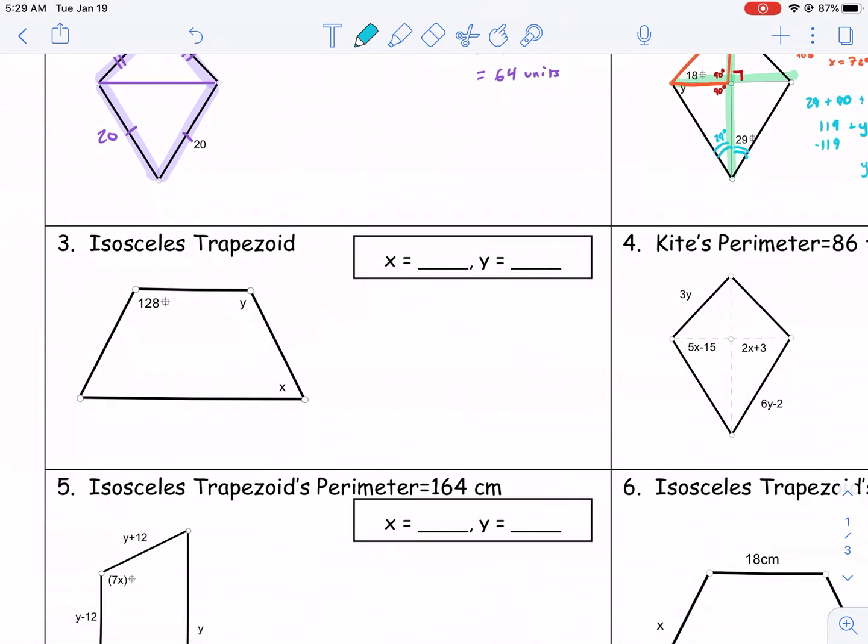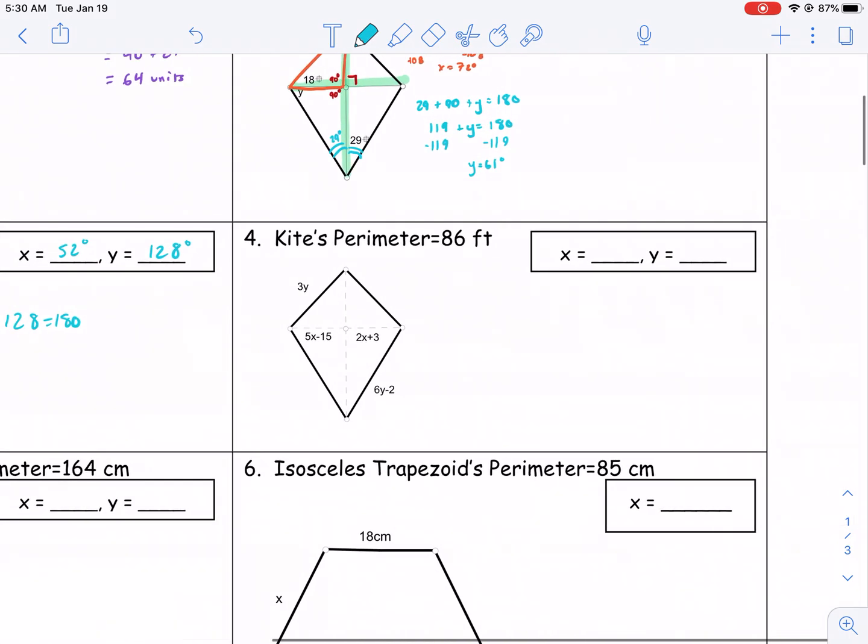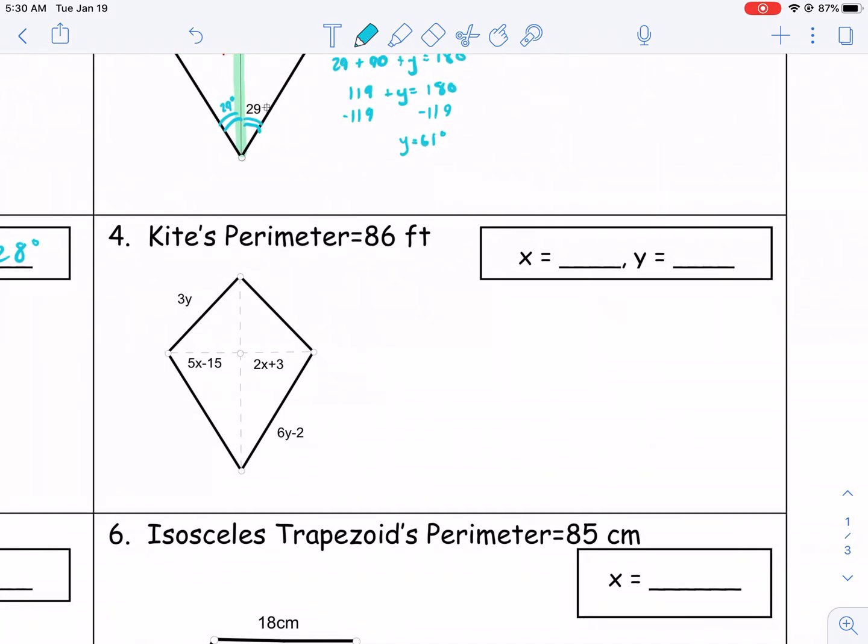Isosceles trapezoid. We've talked about this in another video. Fairly simple here. Isosceles trapezoids have the principle where the base angles are going to be the same. So this is x over here. And then the other base angles, the top base angles are the same. So y is going to be equal to 128. And then they're supplementary, so we subtract from 180. x plus 128 equals 180. After we subtract 128 from both sides, we get 52 degrees for x, and y is 128.